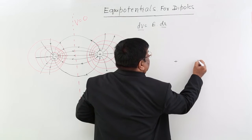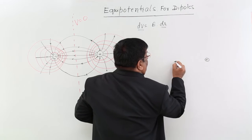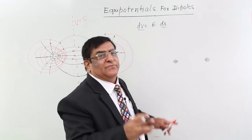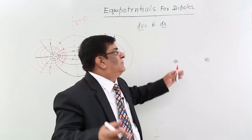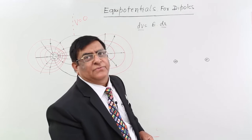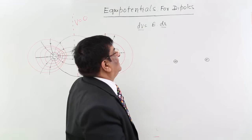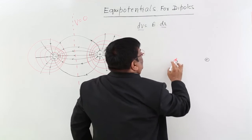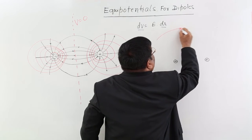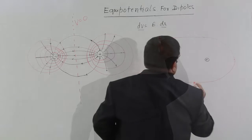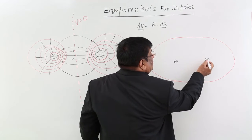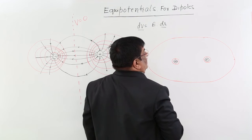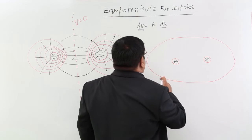Now if the two charges are similar charges — like plus and plus. From very far away, when we look at this system of two positive charges that are very close together and we are far away, all distances are almost the same from these two, so we get an equipotential like this. But as we come closer and very close to it, this is the equipotential surface for this charge, this is the equipotential surface for that charge, and this is the equipotential surface for the complete system.